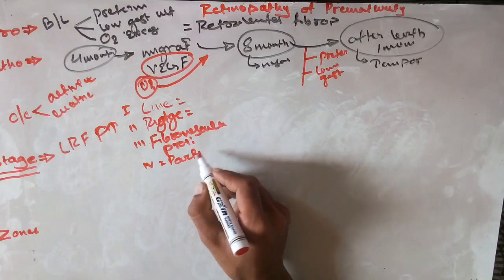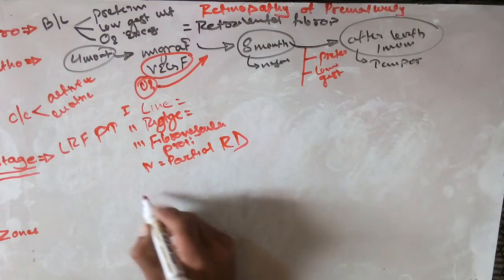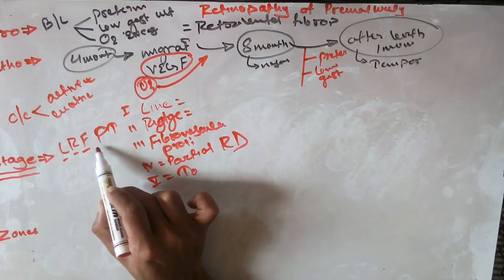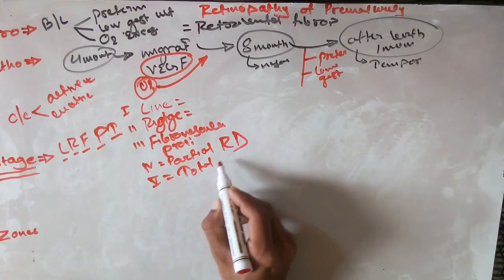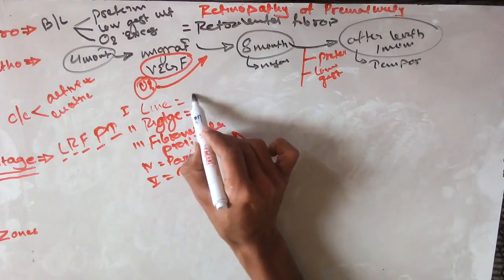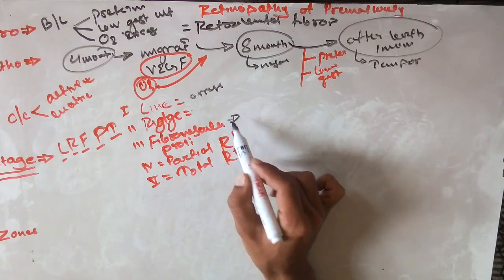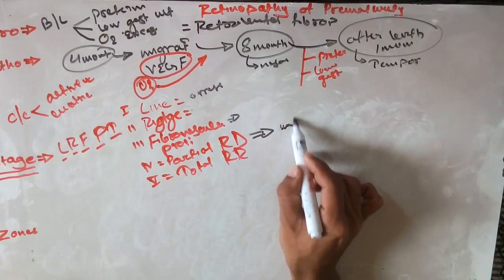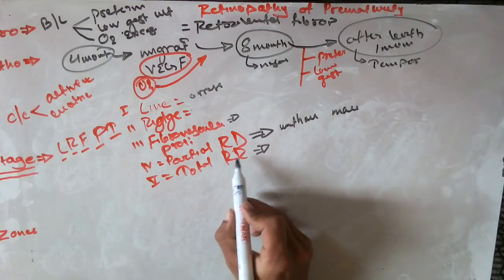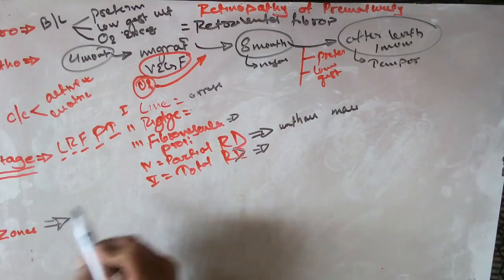Stage 5 (D): total retinal detachment. So the mnemonic is L-R-F-P-D: Line parallel to ora serrata, Ridge, Fibrovascular proliferation, Partial detachment without macula involvement, and total retinal detachment where the macula along with the whole retina is detached.